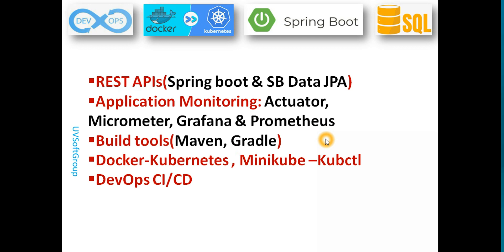How can you start your application development, how can you build your applications, how can you test them, and how can you deploy your application into different environments? After deployment, how can you monitor your application in different environments? These are the steps we know — this is called DevOps. The question is: in real life, how can we work together with development teams and operations teams?